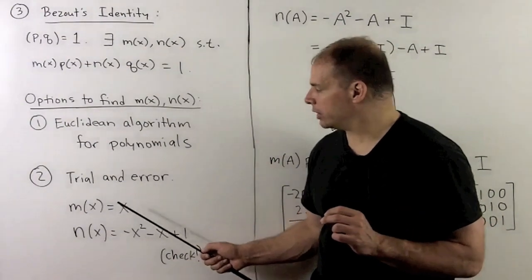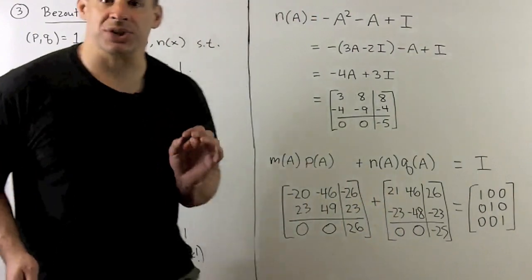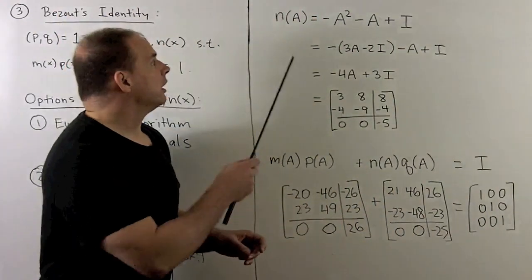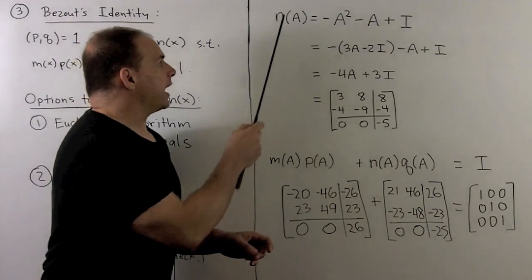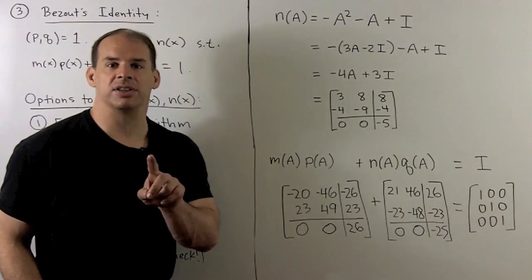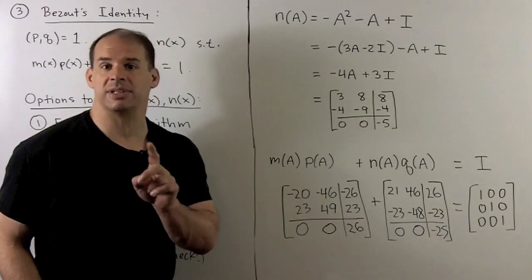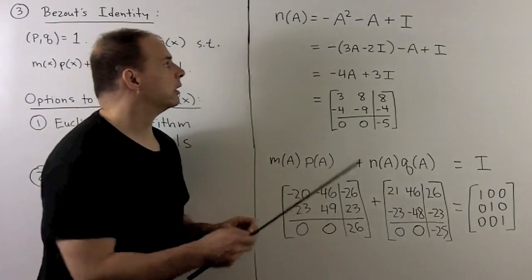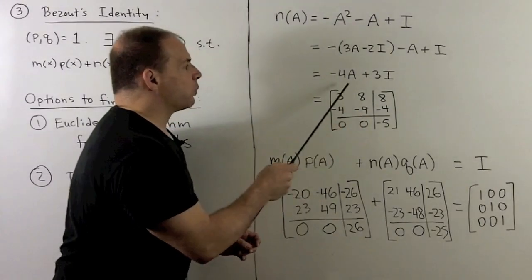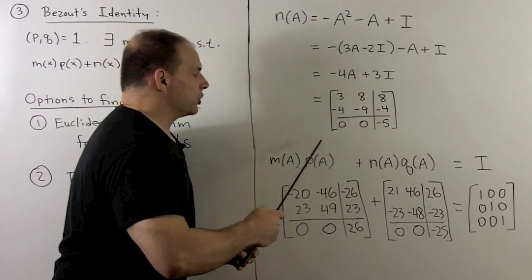With this solution, M of X equals X, so M of A is just A itself. If I compute N of A, we just replace X with A and any constant we replace with that constant times the identity matrix. We use our method from before, and that gives us minus 4A plus 3I to get this matrix here.